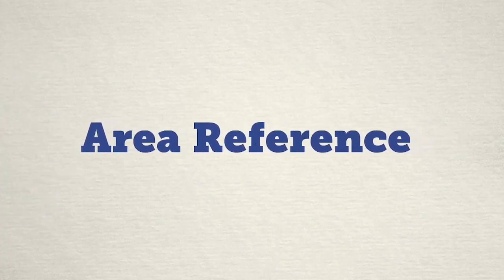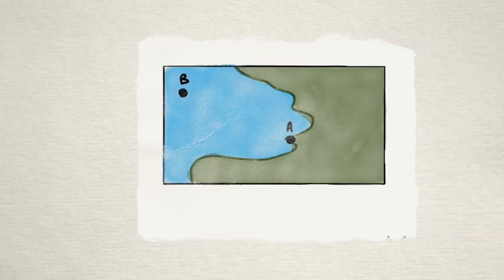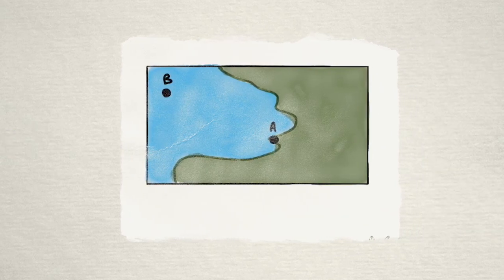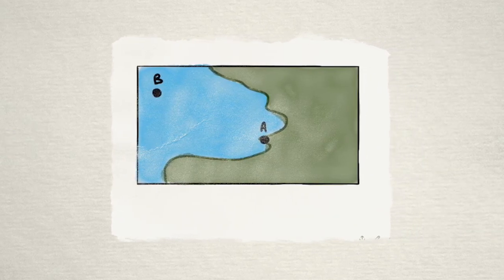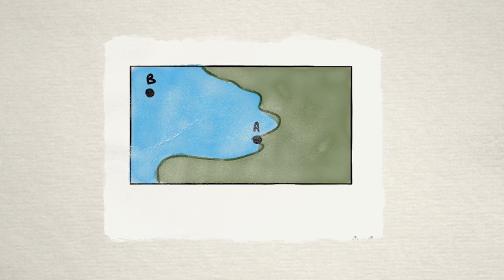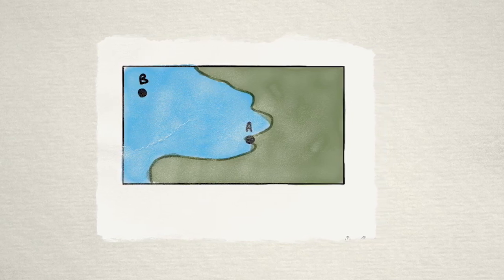Let's start with area reference. Here we have a stunningly detailed map but how do we tell someone where A is as opposed to where B is? Well we start by drawing some lines.